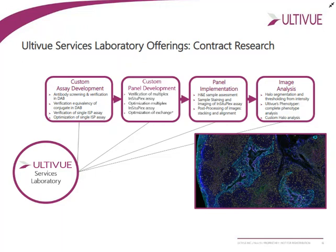Our services lab does an assay development step where we compare the unconjugated antibody in a DAB to the conjugated antibody in the DAB assay to make sure we have not affected the efficacy of the antibody. Then we put all those single-plex assays together once developed with the barcode and combine them into a panel. Once that panel has been developed and approved by the customer, we move on to standard customer samples and can perform image analysis. It's really about having ease of use with a kit, ideally with equipment already in your lab, to easily implement multiplexing fluorescence workflows for high-throughput analysis of large sample sets.